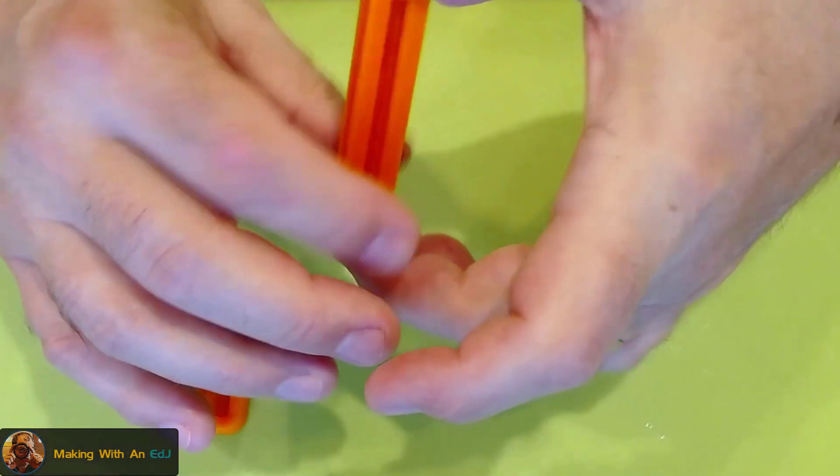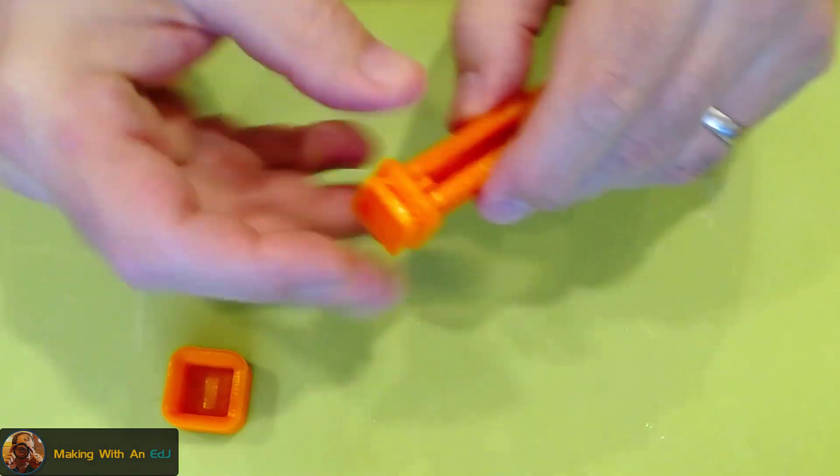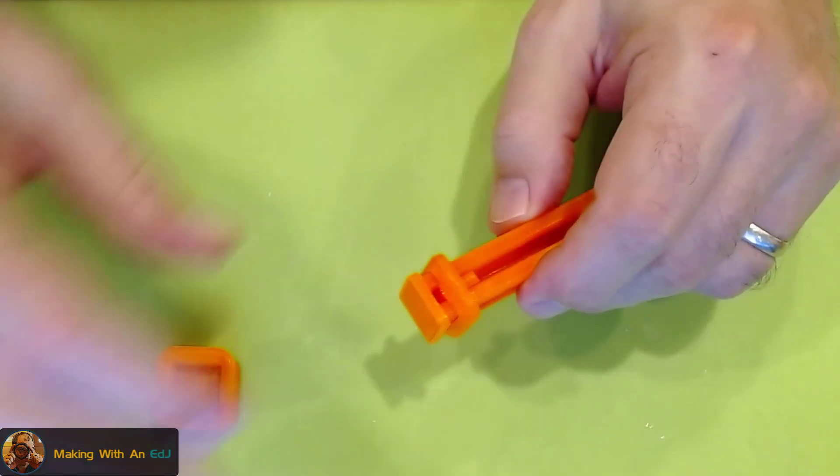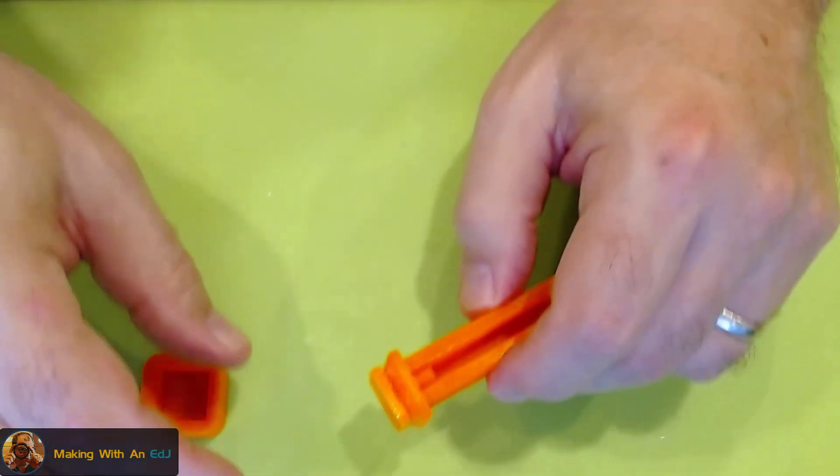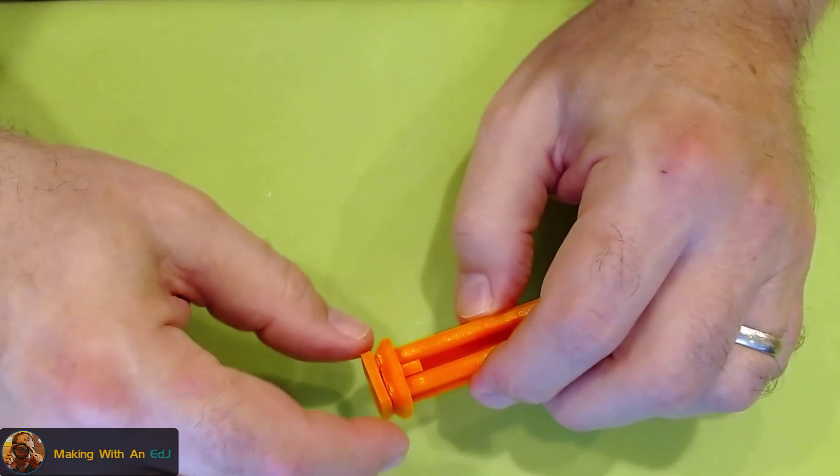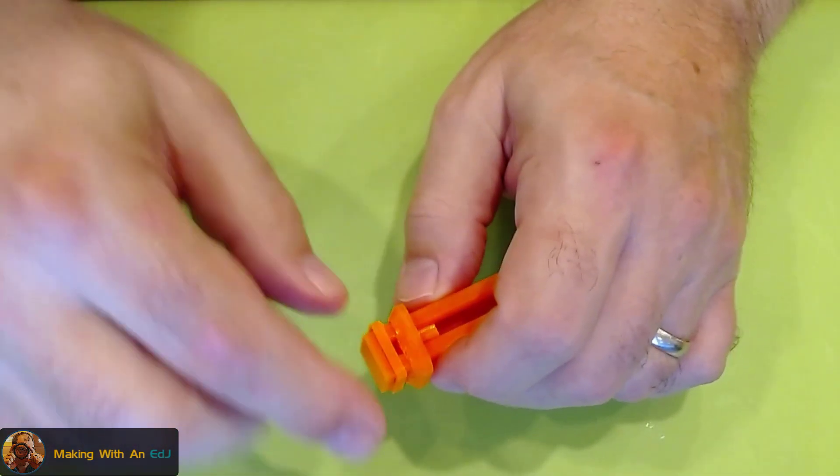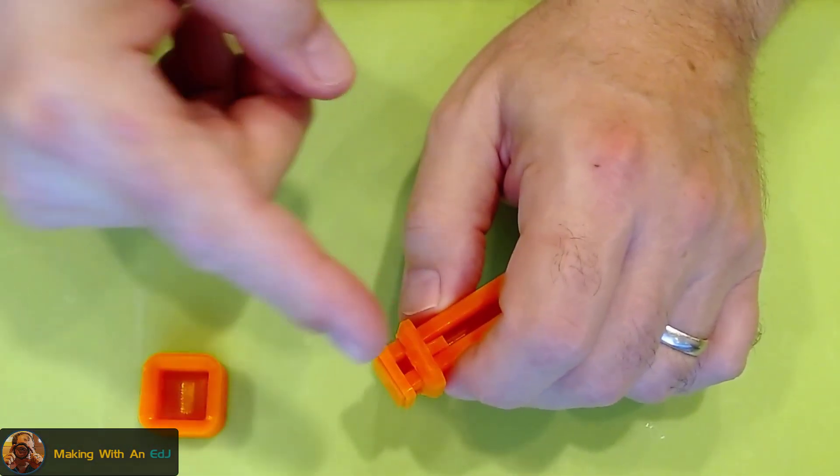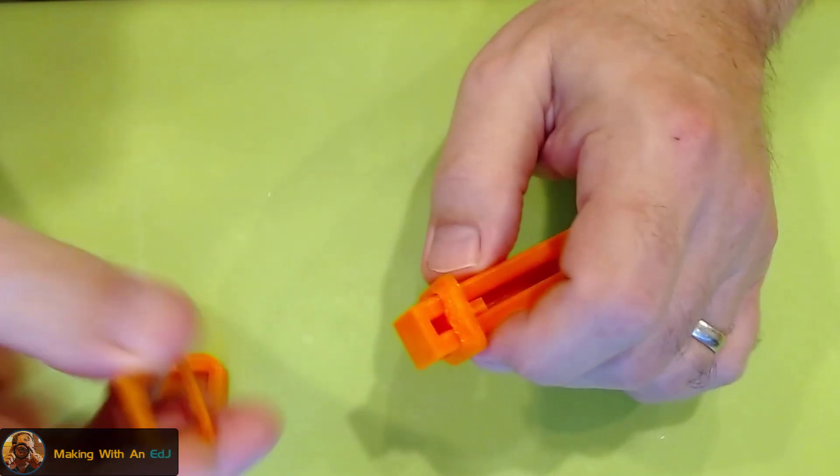So the way this comes apart off the build plate is you're going to need some tools. This is going to be movie magic here, because I've already broken this one loose, but this ring, you just take a little utility knife and cut the four corners, and then this pops off really easy.